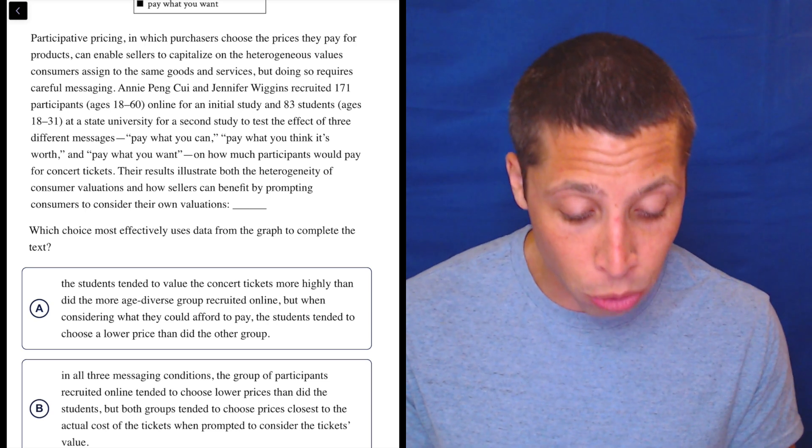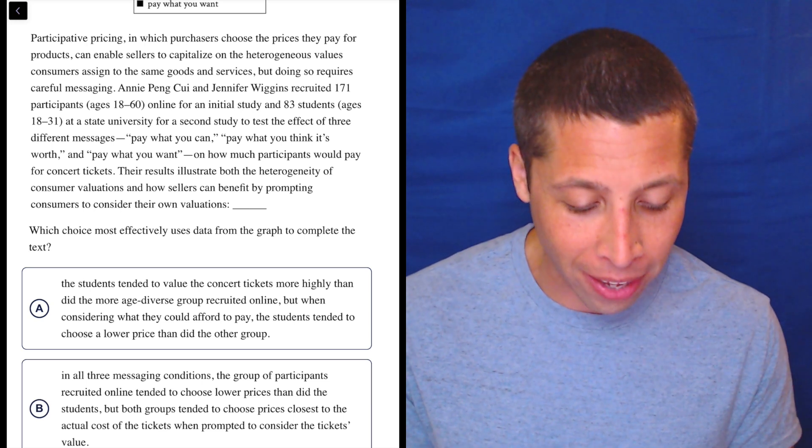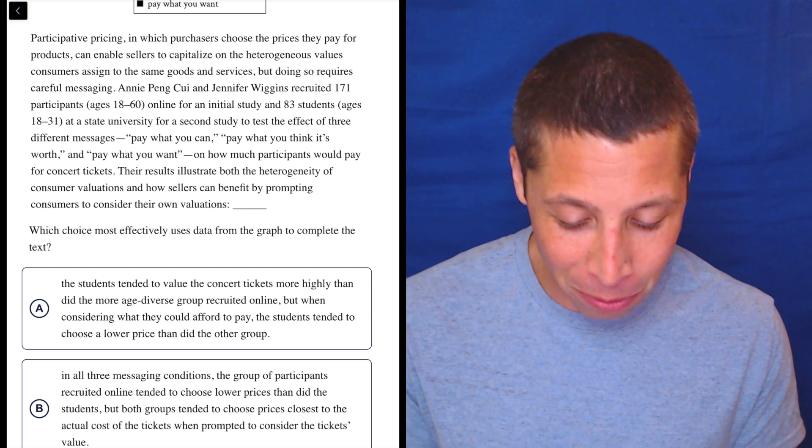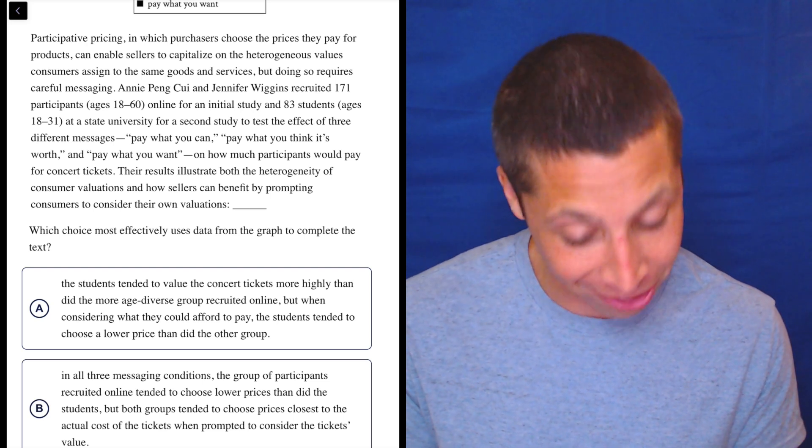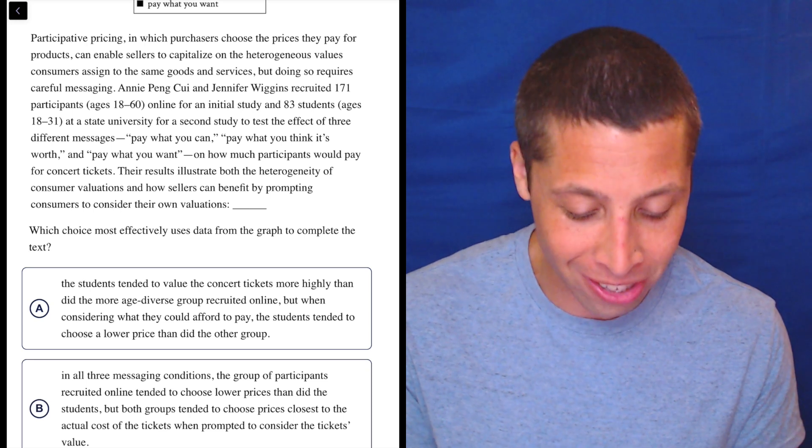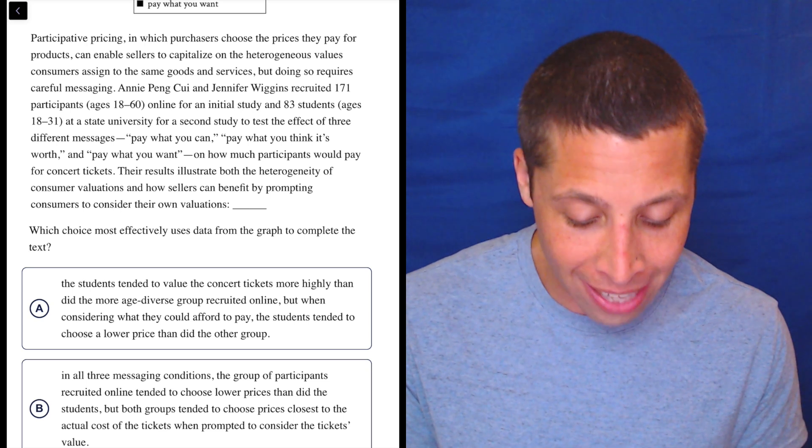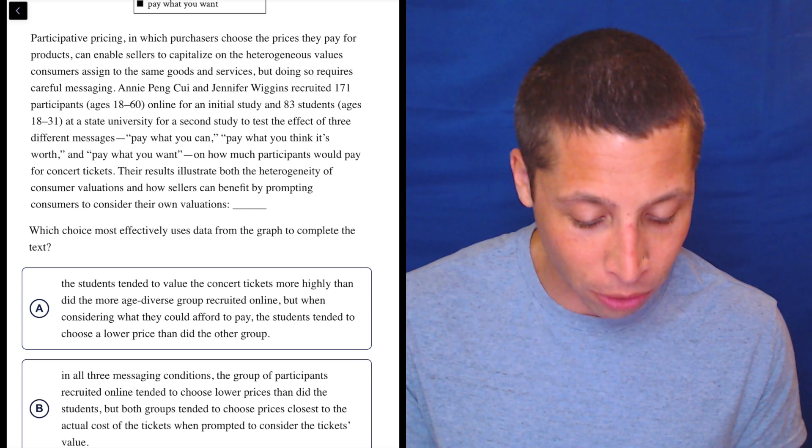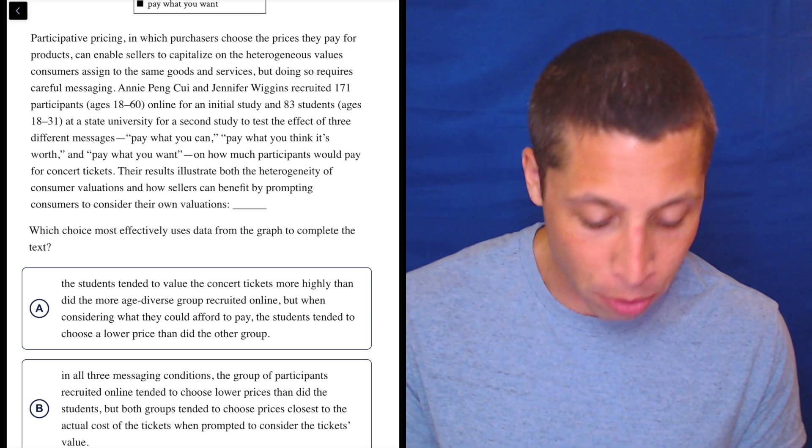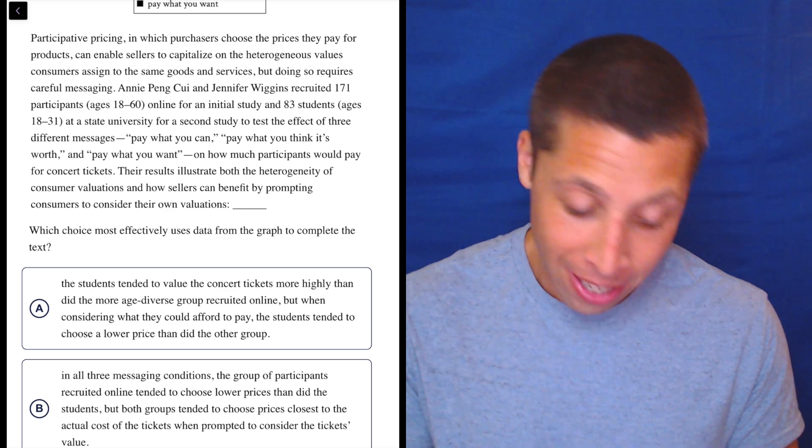Participative pricing, in which purchasers choose the prices they pay for products, can enable sellers to capitalize on the heterogeneous values consumers assigned to the same goods and services, but doing so requires careful messaging. Oh my gosh. Annie Pei and Jennifer Wiggins recruited 171 participants ages 18 to 60 online for an initial study and 83 students ages 18 to 31 at a state university for a second study to test the effect of three different messages: pay what you can, pay what you think it's worth, and pay what you want on how much participants would pay for concert tickets.